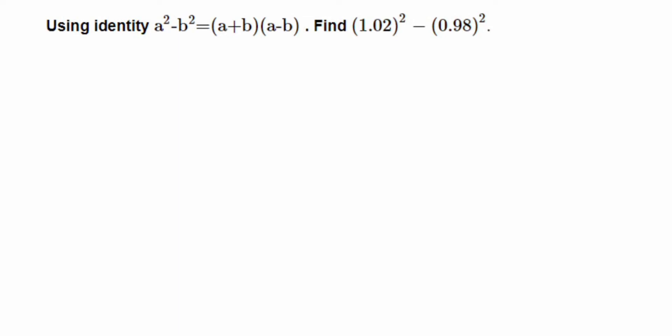Hey everyone, so here is a question on factorization. The question here is: using identity a² - b² which is (a + b)(a - b), find (1.02)² - (0.98)².